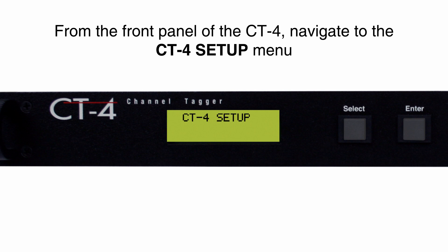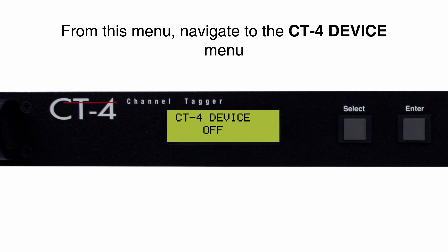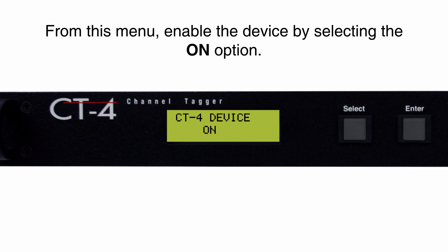From the front panel of the CT4, navigate to the CT4 setup menu, then navigate to the CT4 device menu. From this menu, enable the device by selecting the on option. The CT4 device on setting refers to the overall activation of the CT4 feature of the device and does not actually turn on the carrier outputs of the CT4.